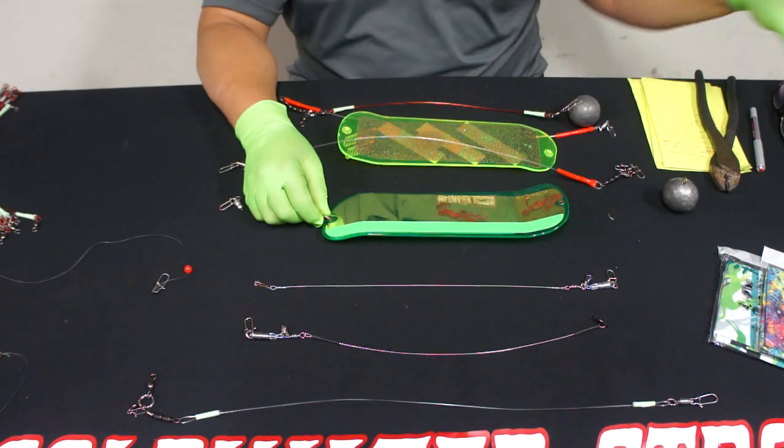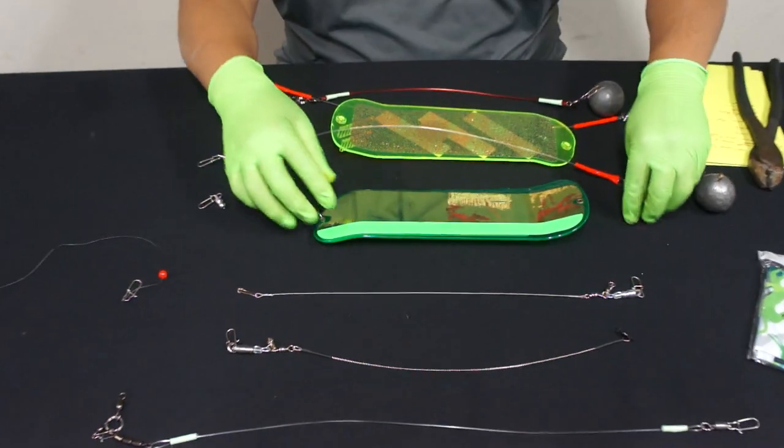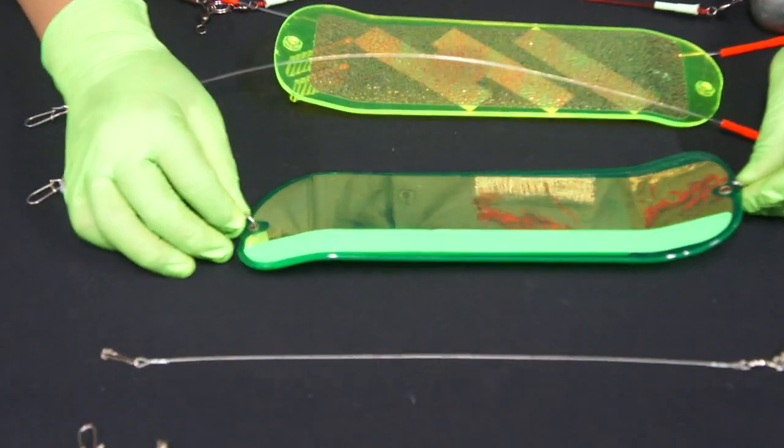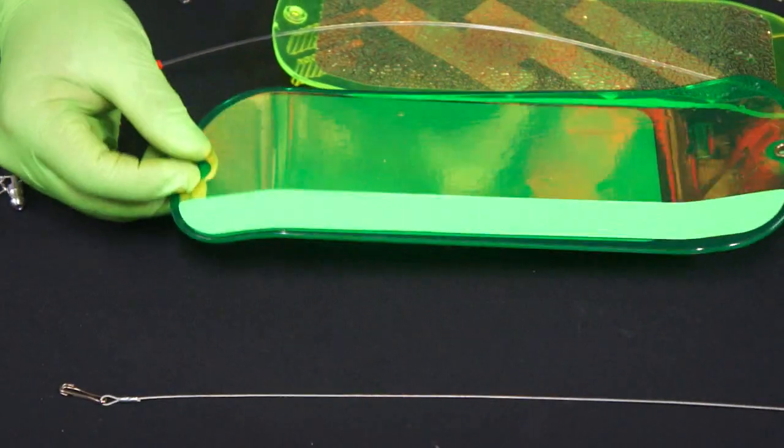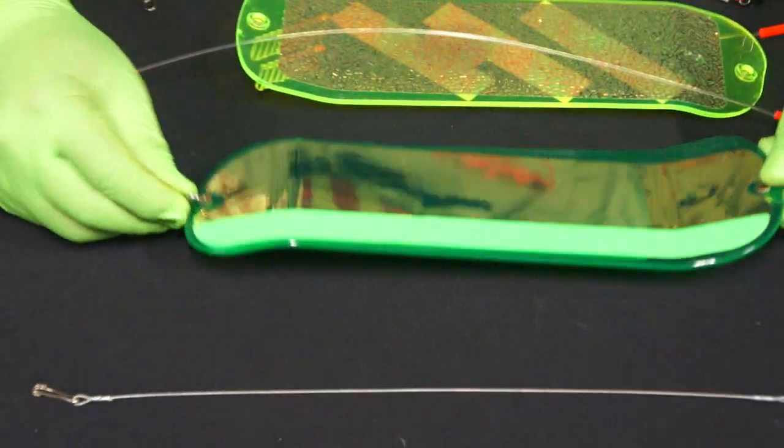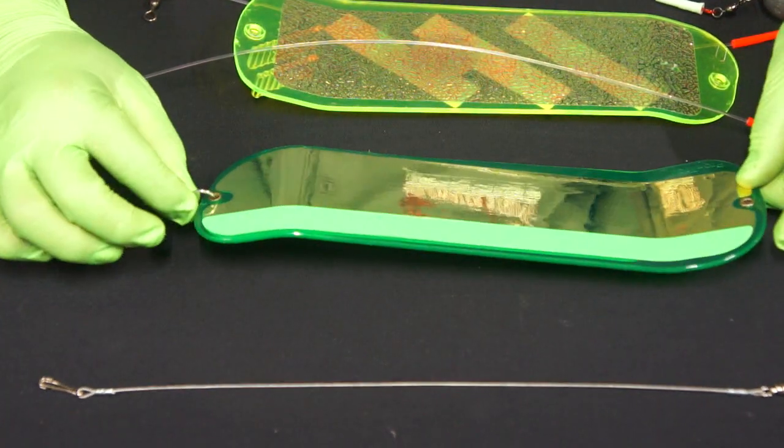So when you do receive a flasher from ProTroll, unfortunately I cut the ring off right here, but as you can see I left the ring on the front and I cut the ring off the back. I cut this ball bearing right off and left the ring on there.